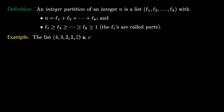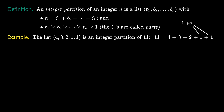For example, the list 4, 3, 2, 1, 1 is an integer partition of 11, because 11 is equal to 4 plus 3 plus 2 plus 1 plus 1. This is a partition of 11 into 5 parts.